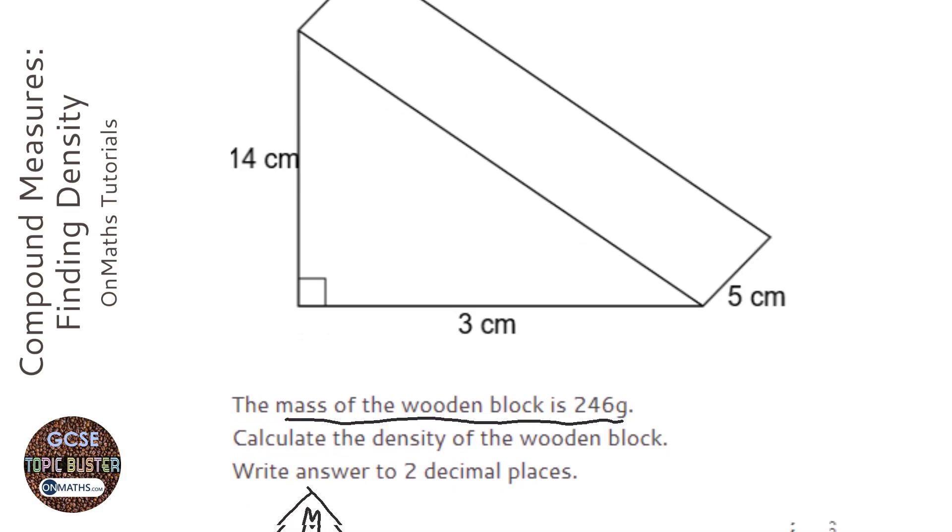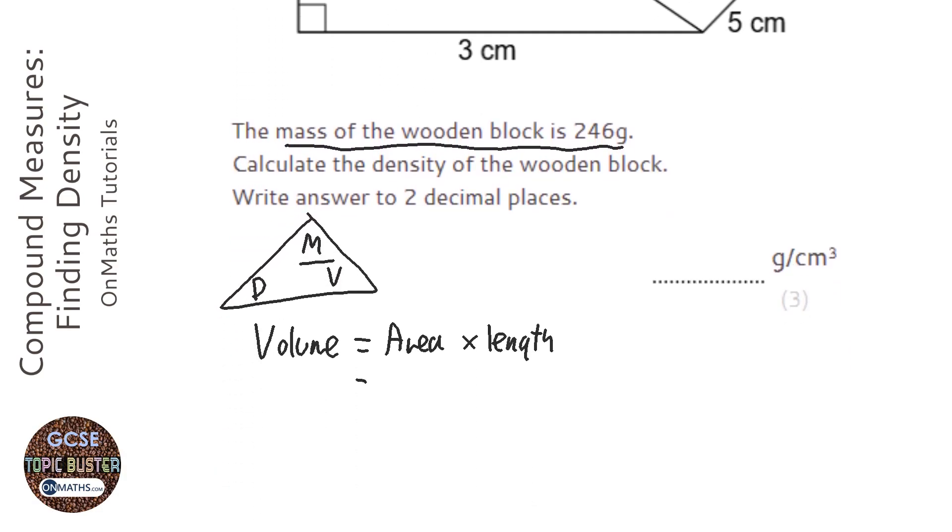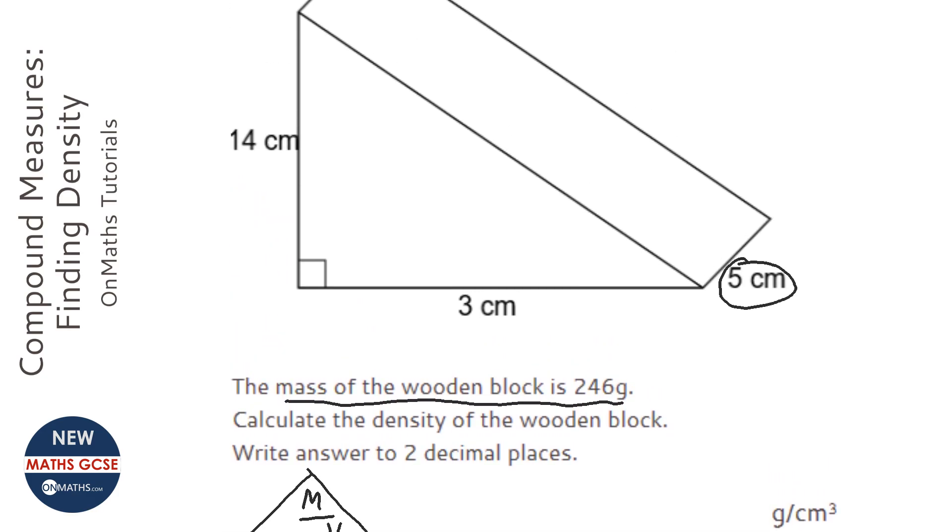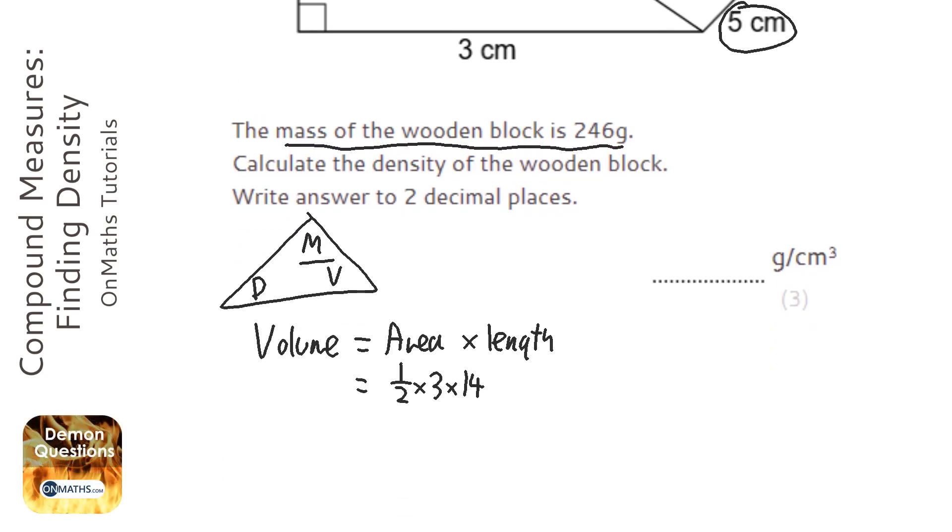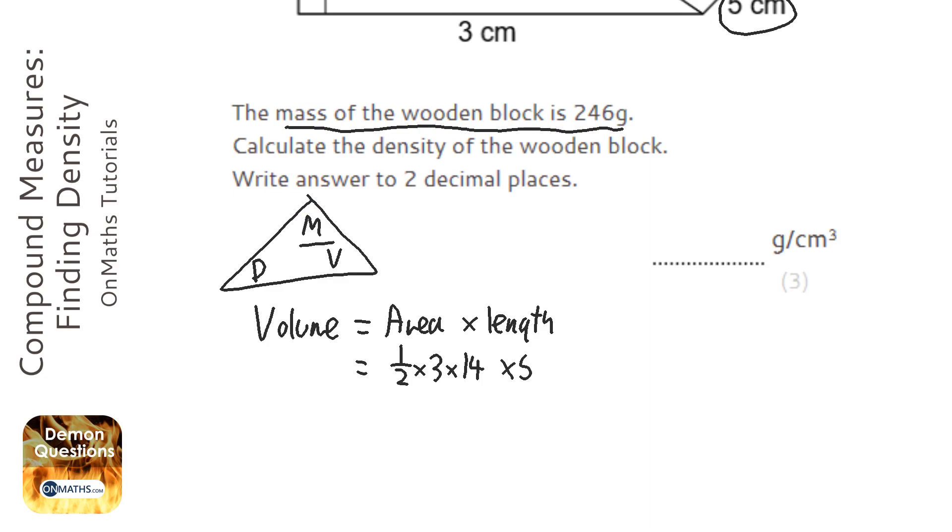The area of a triangle is half times base times height. The length is how 3D the prism is, which is 5, so we're going to times it by 5.